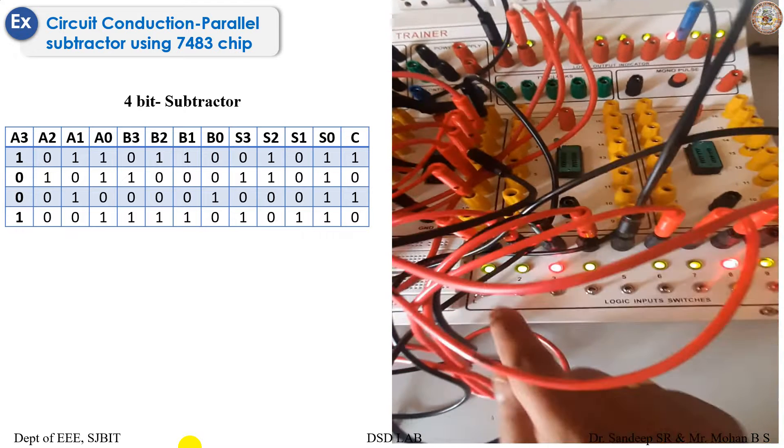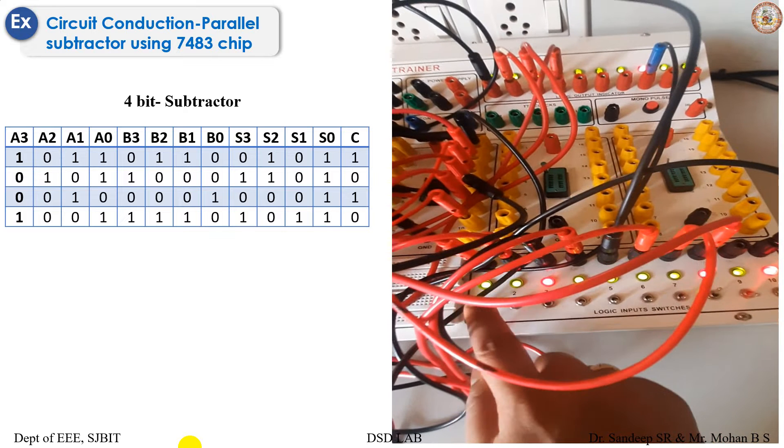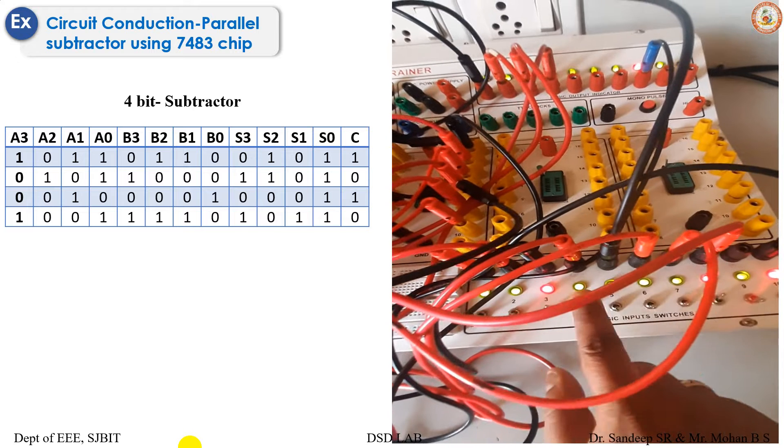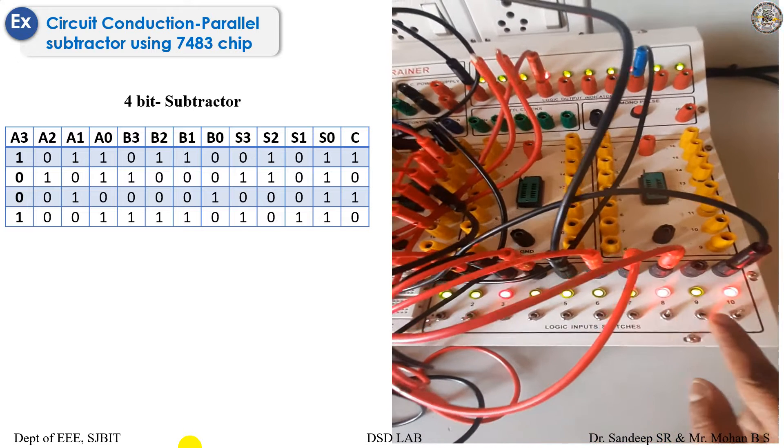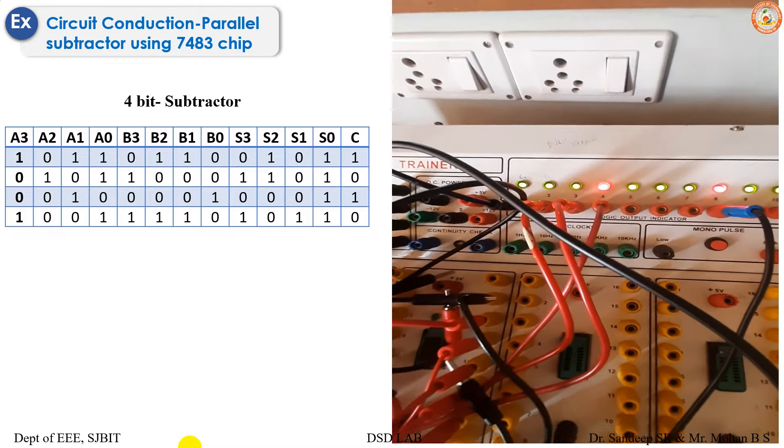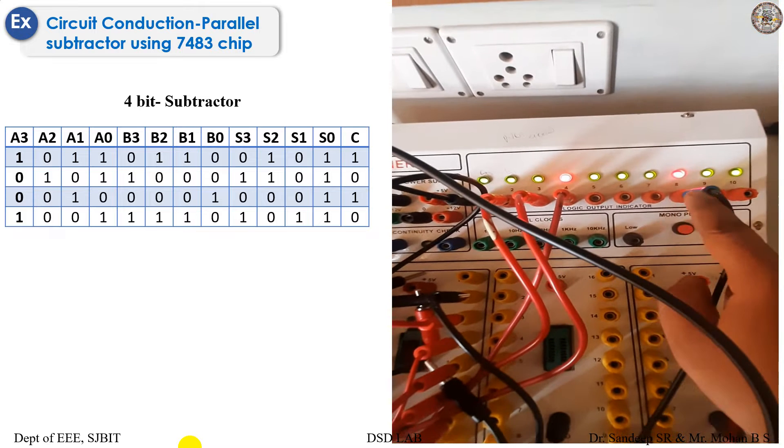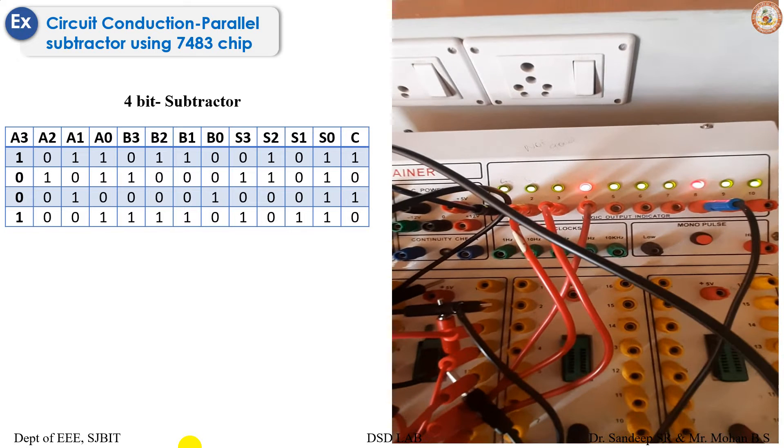Similarly for the third row, the input being 0, 0, 1, 0, 0, 0, B0 is just high. And then you get the respected output as 0, 0, 0, 1, 1. Carry is also 1, and S0 is also high. So in this way, one can verify for different data for parallel subtractor.